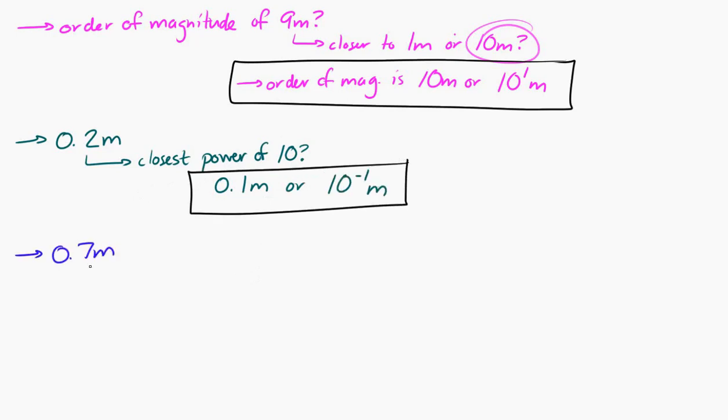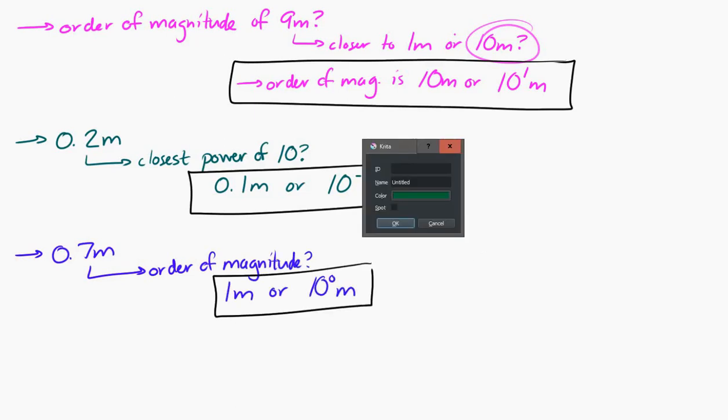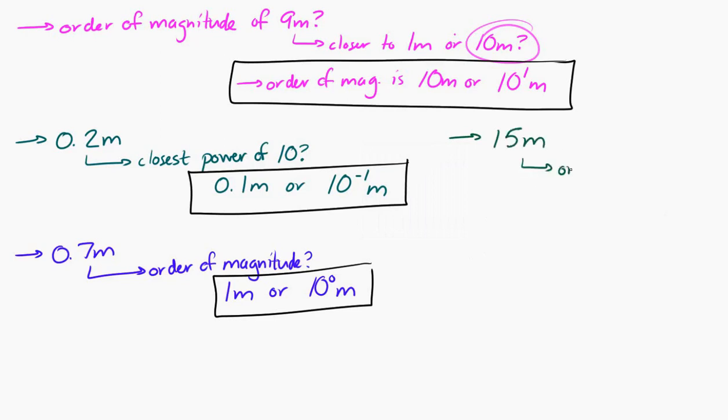0.7 meters, what's the order of magnitude? Well, 1, it's closest to 1 meter, so 10 to the 0 meters. 15 meters, what's the order of magnitude of 15 meters? Is that closest to 10 or 100? Well, it's closer to 10, definitely. So, the order of magnitude is 10 meters, or 10 to the 1 meter.